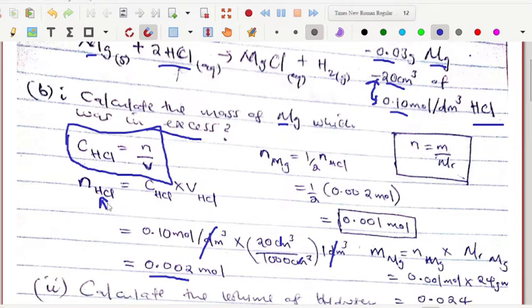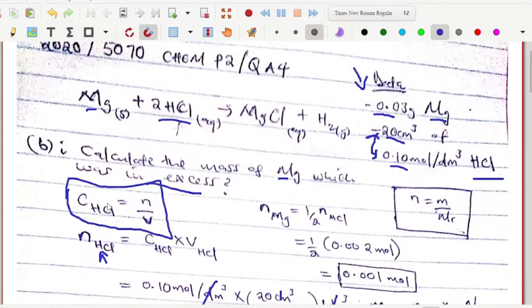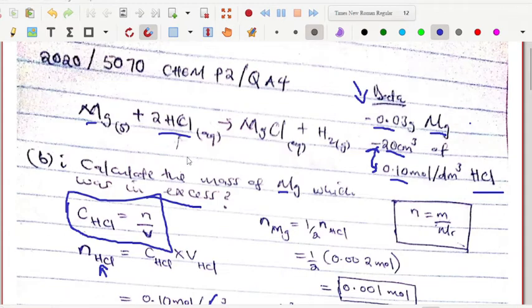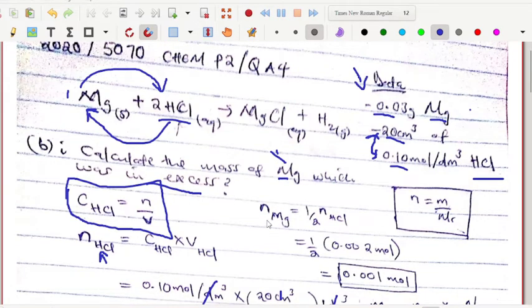Now here we look at the mole ratios to find the number of moles for magnesium. Magnesium here is having one, but this one is two, meaning that the number of moles for magnesium are half the number of moles for hydrochloric acid. When you look at the mole ratios here, you can see that this is what I did.